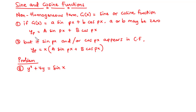For Case 2, if we encounter a case where sin(px) and/or cos(px) appears in the complementary function, then we set yp equal to x times the quantity a·sin(px) + b·cos(px). These are the two cases that may occur.